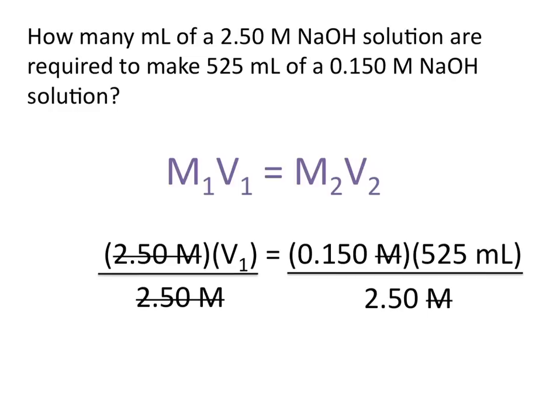We're left with the volume of our 2.5 molar solution required, equal to 0.150 times 525 divided by 2.5. And because the units of molar canceled out, we're left with units of milliliters. So the volume of 2.5 molar NaOH required in this problem is 31.5 milliliters.